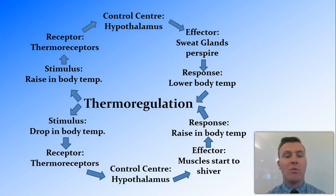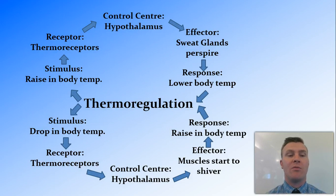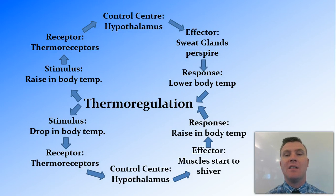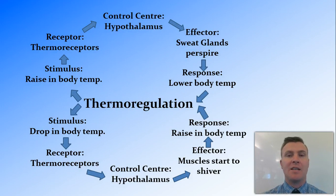This is what we refer to as a positive and negative feedback loop — the positive being the raise in body temperature and how that is dealt with, and the negative being the decrease in body temperature and how that is dealt with. And you can see that once we put it all together, it looks a bit like a figure of eight.